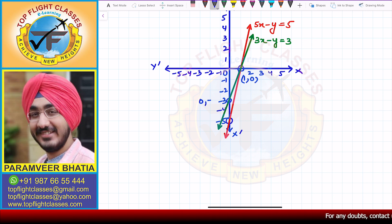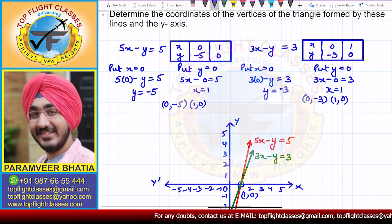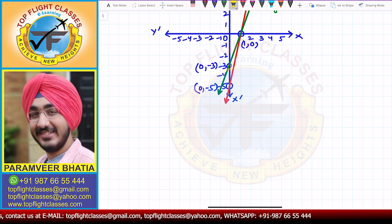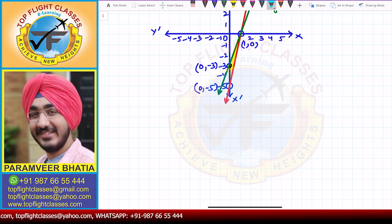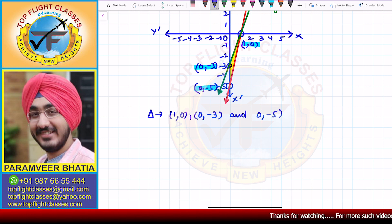The two lines meet the y-axis at (0, -3) and (0, -5), and both pass through (1, 0). We need to find the vertices of the triangle formed by these two lines and the y-axis. The triangle is formed by the points (1, 0), (0, -3), and (0, -5). This is the triangle and these are its coordinates.